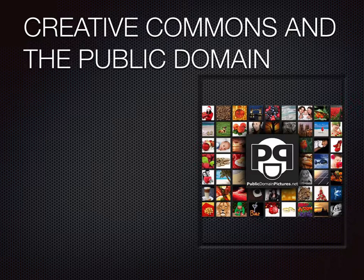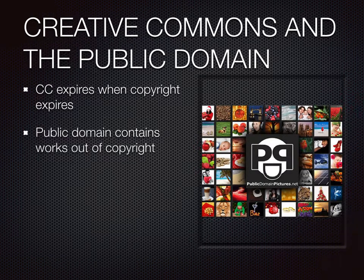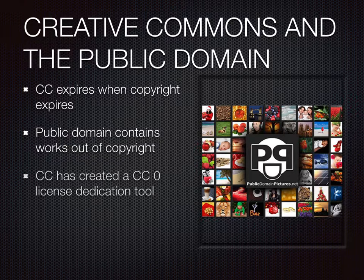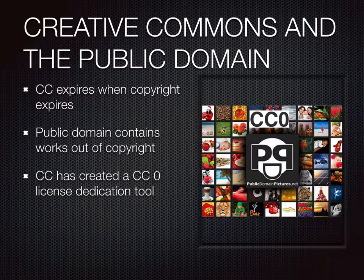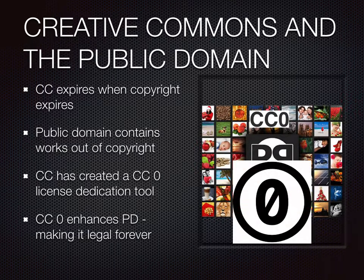Since Creative Commons overlays copyright, when copyright expires, so would any Creative Commons licenses in place. Works that pass out of copyright enter the public domain. Works can also enter the public domain by a creator's grant, but this could be changed by the creator at a later date. Creative Commons has created a special license, CC0, to help an author permanently dedicate their work to the public domain. CC0 enhances the nature of the public domain dedication by making it legally set forever.